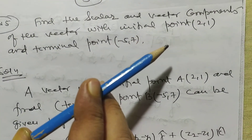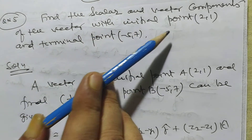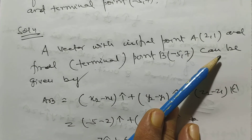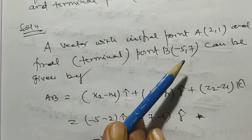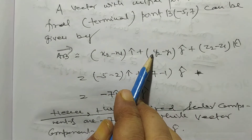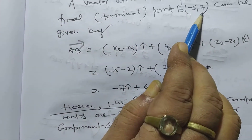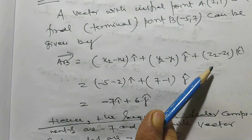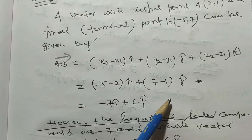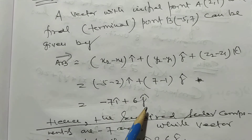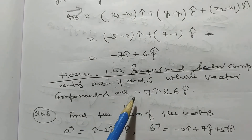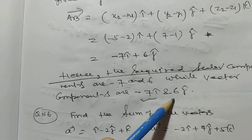Now, find the scalar and vector components of the vector with initial point (2, 1) and terminal point (−5, 7). A vector with initial point A(2, 1) and terminal point B(−5, 7) can be written as: Vector AB = (x₂ − x₁)i + (y₂ − y₁)j = (−5 − 2)i-cap + (7 − 1)j-cap = −7i-cap + 6j-cap. Hence, the required scalar components are −7 and 6.